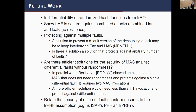Open problems include: verifying assumed properties of the hash function, showing security against combined fault-and-leakage attacks simultaneously, and protecting against multiple differential faults. Currently the scheme protects against one fault due to a redundancy of one. For more fault tolerance we need more redundancy. The parallel work handles MACs and has schemes for more than one fault, but protecting against two faults requires two MAC invocations.